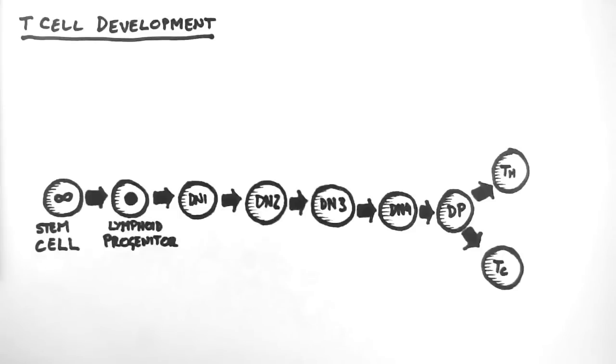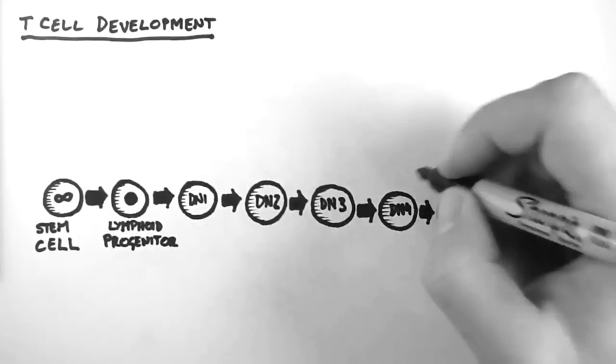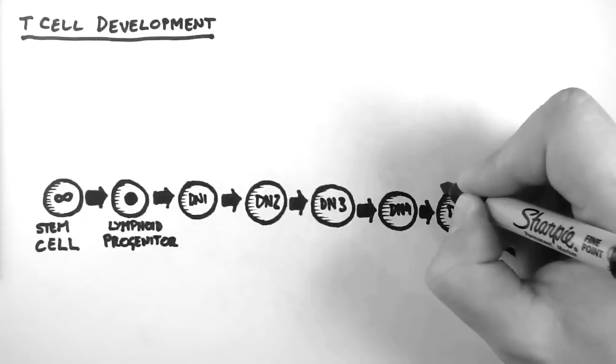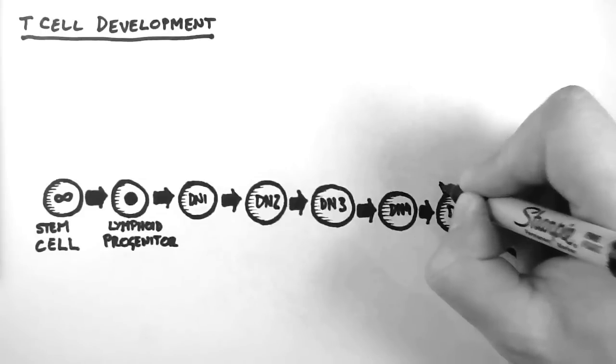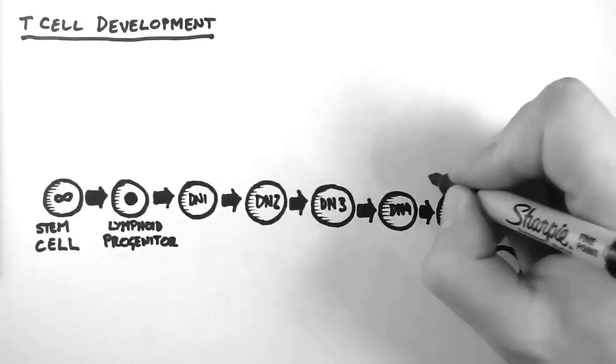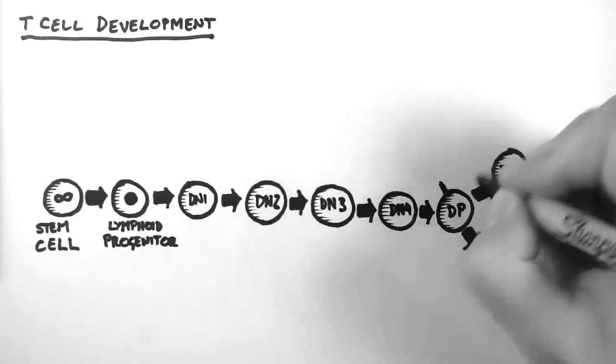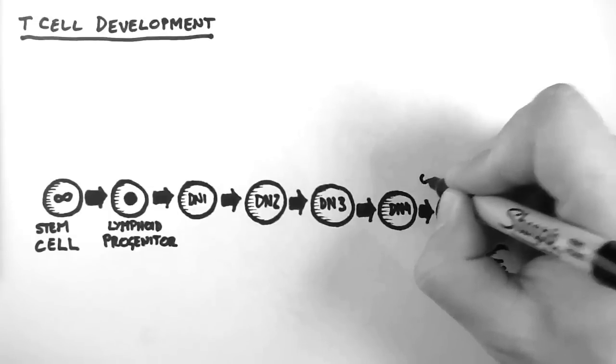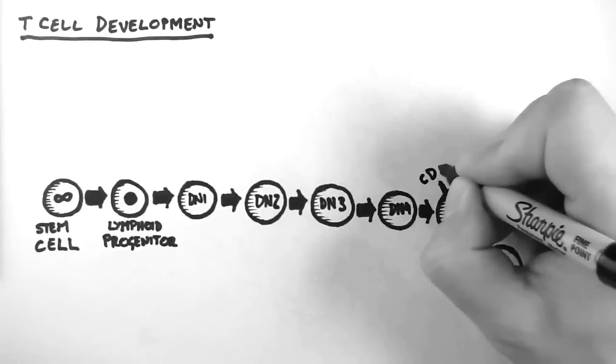So there are two glycoproteins, that is, a protein with a sugar attached to it, which are classically used to determine if a T cell is a helper or a cytotoxic T cell. These two glycoproteins are called CD4 and CD8. The CD stands for cluster of differentiation. These are basically a bunch of markers that help immunologists differentiate one cell type from another. We often use the terms CD4 positive or CD8 positive when talking about a cell that expresses one of these markers. And this is where the nomenclature of the developmental cells comes from.